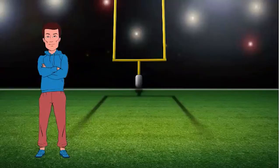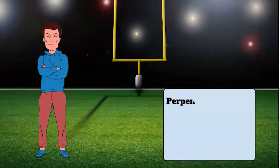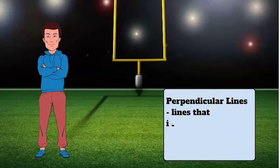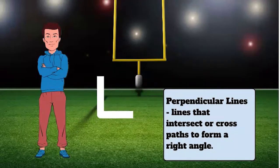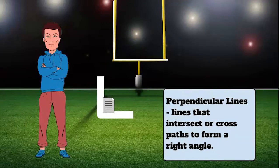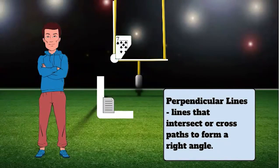Let's see what we can find on the football field. Perpendicular lines are lines that intersect or cross paths to form a right angle. Right angles are 90 degree angles, which create a square corner. Look at the goal post — these two line segments are perpendicular. They meet at a common endpoint and form a right angle.